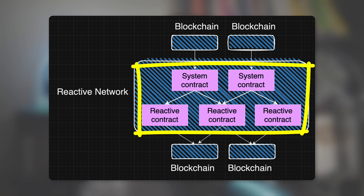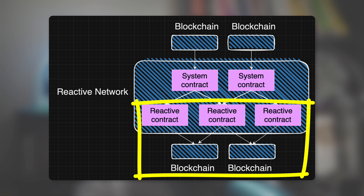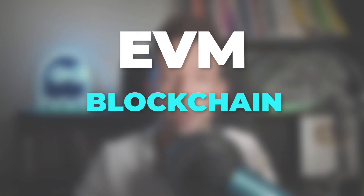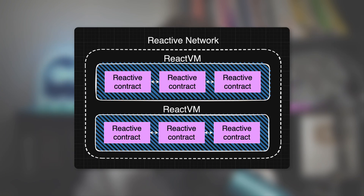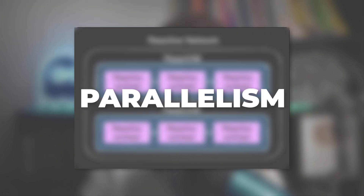These events are then dispatched to what we call Reactive smart contracts, which are the core of the Reactive Network. This is where we process the events and decide which actions to take, like sending a transaction to a destination blockchain or updating the internal state of a Reactive smart contract. The Reactive Network is an EVM chain running a modified version of the Ethereum Virtual Machine. Unlike other EVM chains, there is a separate React VM for each deployer address, meaning all contracts deployed from an address run in the same React VM. Those contracts can interact with each other but not with Reactive smart contracts deployed on other React VMs — this design enables parallelization of the network's operations.